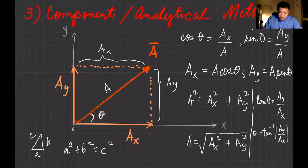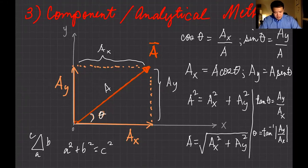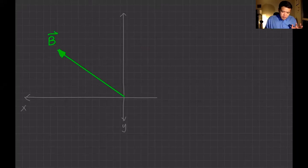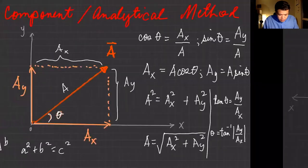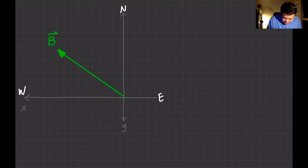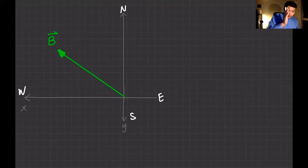You can pause the video to take a screenshot or take note of these equations. Now let's look at another example — vector B, which points somewhere to the north and to the west. We can put directions: north, south, east, west. Vector B is in the second quadrant of the Cartesian coordinates.